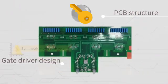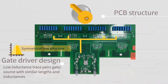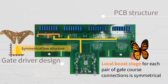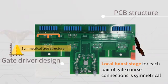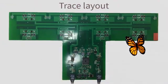The symmetry is achieved by a mezzanine PCB and a tree structure with low inductance trace pairs gate source with similar lengths and inductances. The local boost stage layout for each pair of gate connections is symmetrical. Here, the trace layout is shown in more detail.